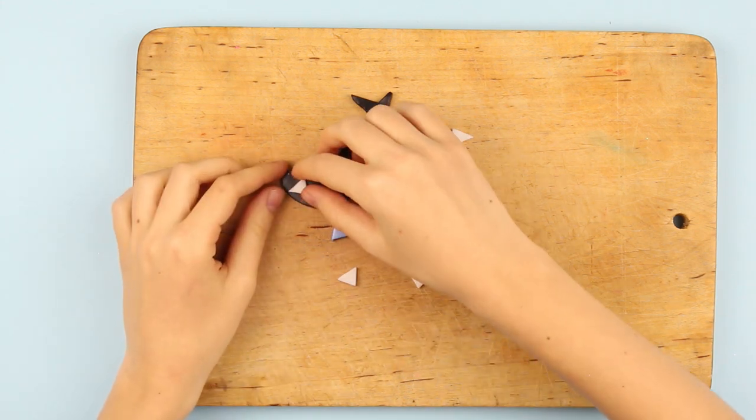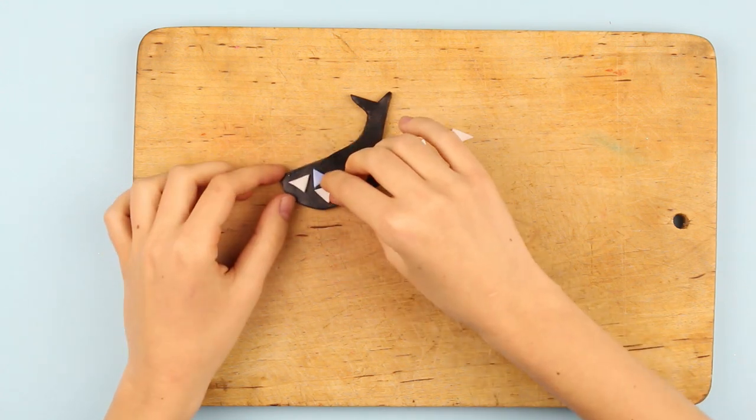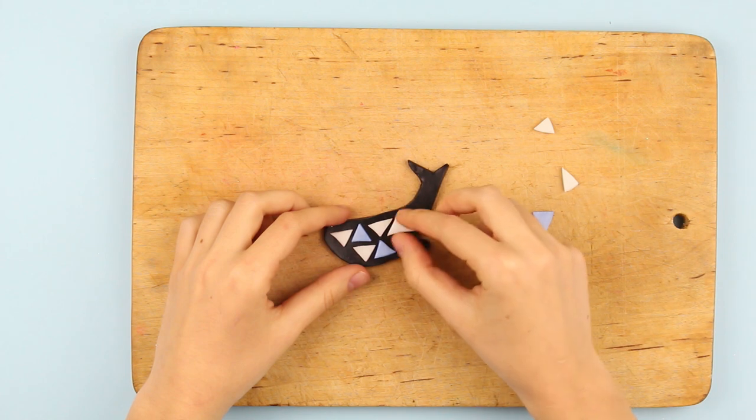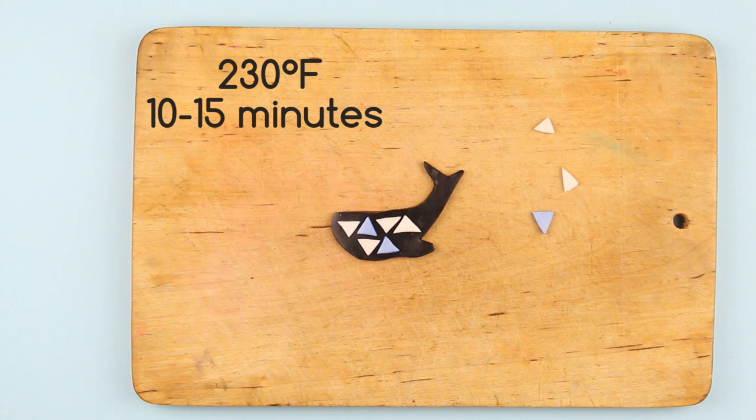Place the cutouts on the whale. Press the details over a bit. Bake the whale at 230 degrees Fahrenheit for 10 to 15 minutes.